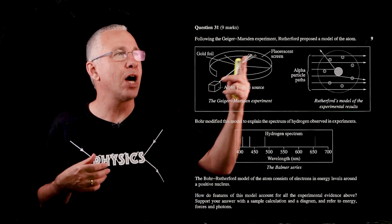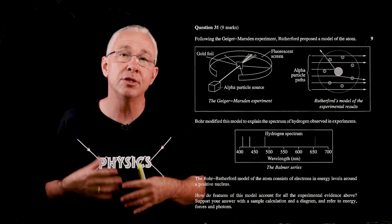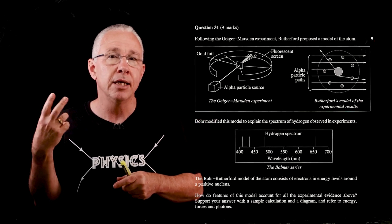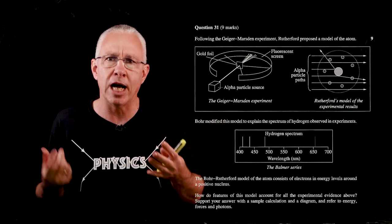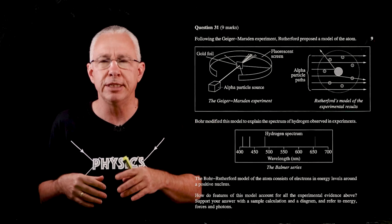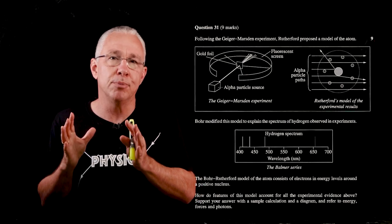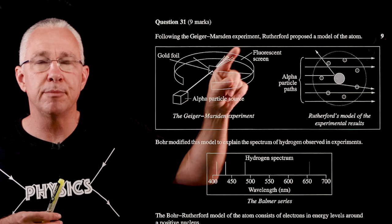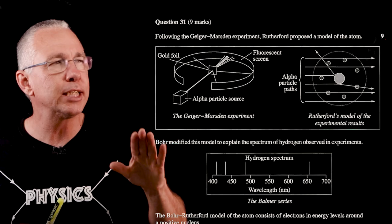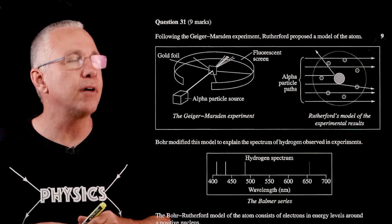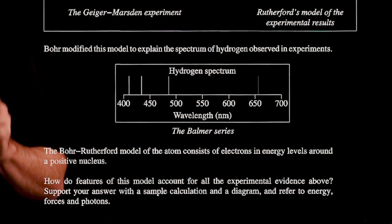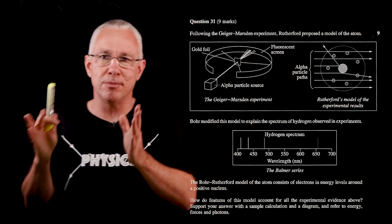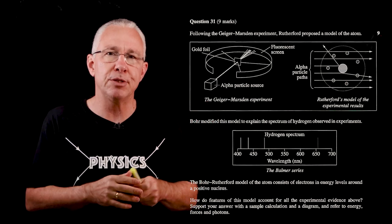Question 31 is our nine-mark question. This nine-mark question gives you a real good opportunity to demonstrate a comprehensive understanding of the concepts presented here. Nine marks means approximately 14 to 15 minutes of time, putting aside a portion for planning. The question is about the Rutherford model — first the Geiger-Marsden experiment, then Rutherford's planetary model, and then how Bohr modified that model to explain the hydrogen spectra shown here.